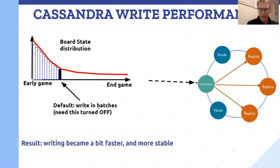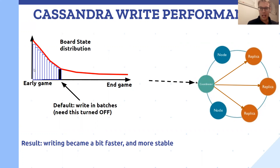Unfortunately, by default Spark wants to write to Cassandra in batches of the same partition. That's clearly not what we want here — if you're writing very small partitions one at a time, that's not efficient. But on the other hand, with these very large partitions in the early game, trying to write them one at a time will actually overwhelm your system, which is what happened to me. To solve this, the default batch writing had to be turned off, along with other writing parameters that had to be tuned. The result was that the writing became a bit faster, but more importantly became much more stable.